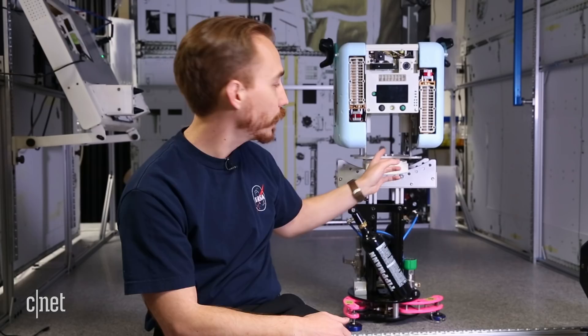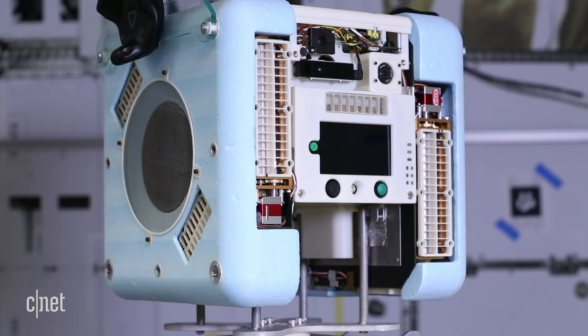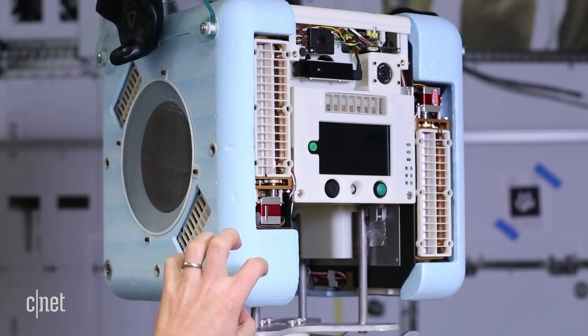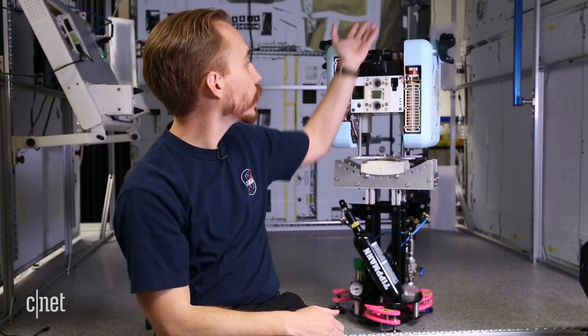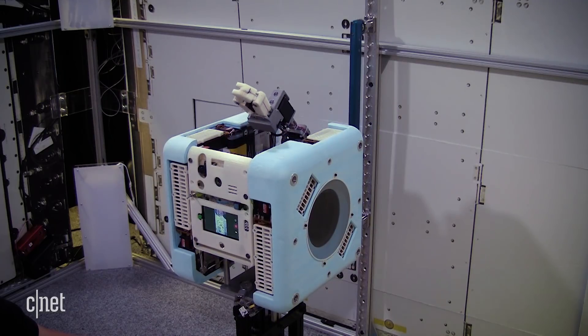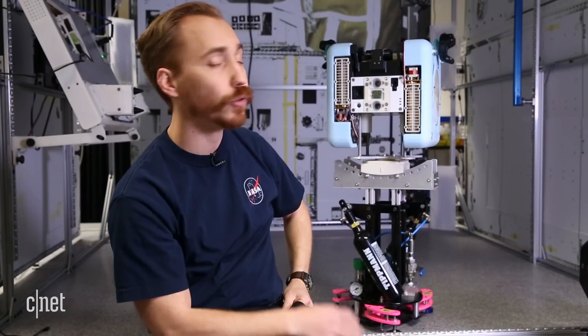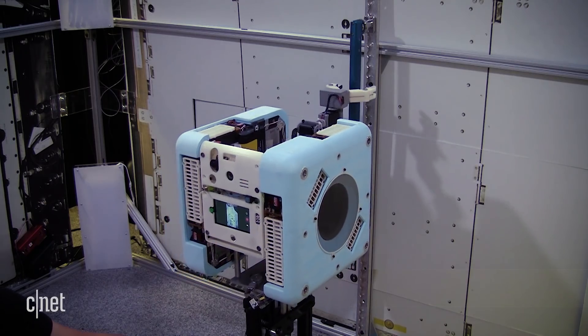This is where the batteries plug in on the bottom, and this whole area is open for other hardware to plug into it. In the back on the top is where the perching arm is. This little arm can pop out and it's got a little gripper that can grab onto a handrail—the blue handrails that are all over the space station that astronauts actually use to move around.